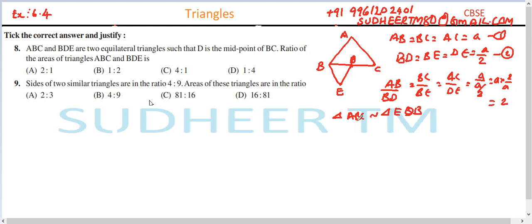Since triangles are similar, ratio of their areas is equal to ratio of the square of their sides. So area of ABC divided by area of BDE is equal to (AB/BD)² = 4. Therefore the ratio is 4:1, so option C is the right answer here. Now coming to question number 9.